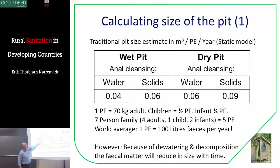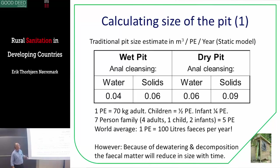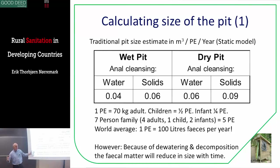That is if you only use water for anal cleansing. If you use other materials, you need to increase the volume. This is translated into 40 liters per person per year. So for five people in the family, that's 200 liters; over 10 years, that's 2,000 liters. For some conditions, it will become 3,000 liters.